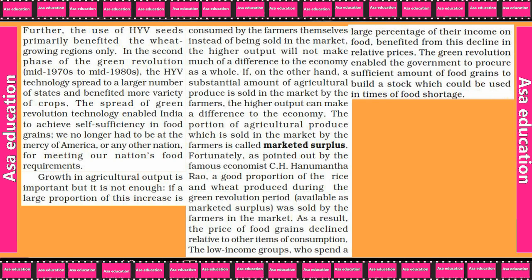In the second phase of the Green Revolution, mid-1970s to mid-1980s, the HYV technology spread to a large number of states and benefited more varieties of crops. The spread of the Green Revolution enabled India to achieve self-sufficiency in food grains. We no longer had to be at the mercy of America or any other nation for meeting our food requirements.